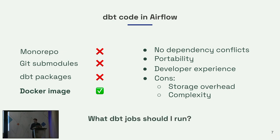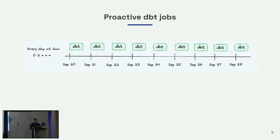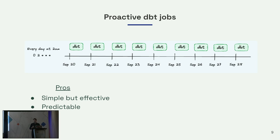Now that you know how to get your DBT code into Airflow, what DBT jobs do you actually want to run? I break this into two. The first are what I call proactive DBT jobs — jobs that run on a schedule, typically every hour, every two hours, or every day at 2 a.m. The great thing about them is that they're very simple but effective, really easy to set up. You just choose the cron and then set it and forget it. They're highly predictable — people learn to expect data at certain times, the cadence is known.